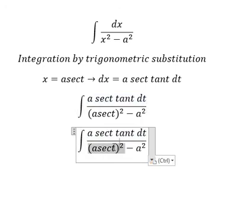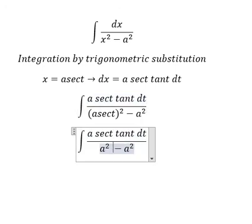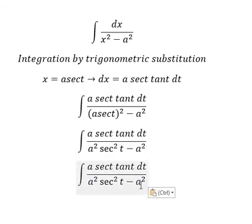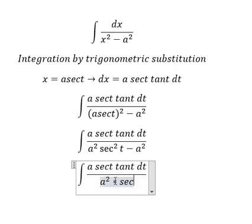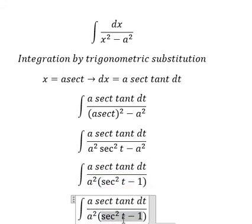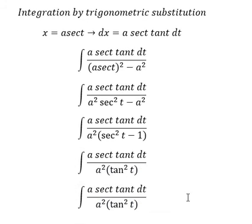This becomes a² sec² t. We have a² and a², so we can do factorization. This changes to tan² t. The a tan t we simplify with a tan t, and you will get this.